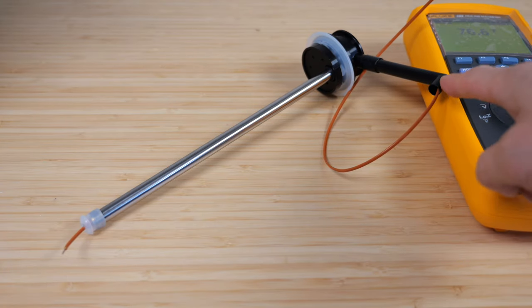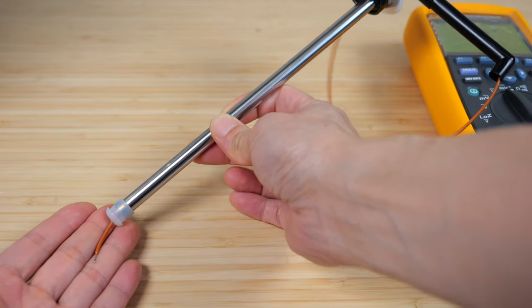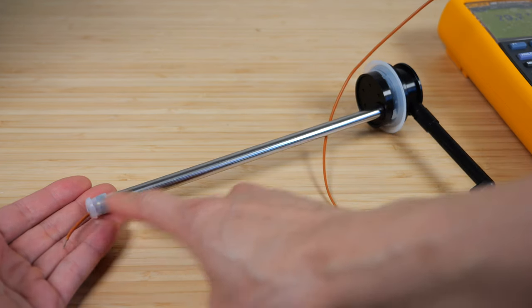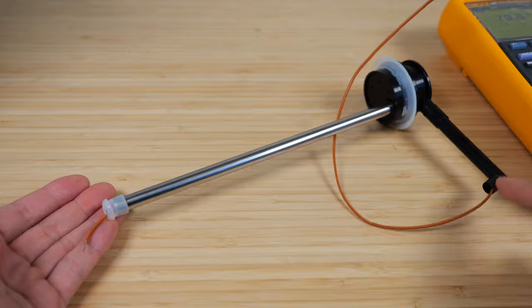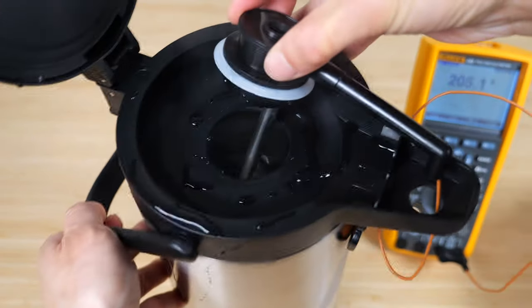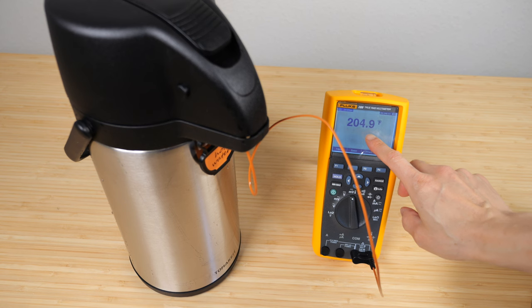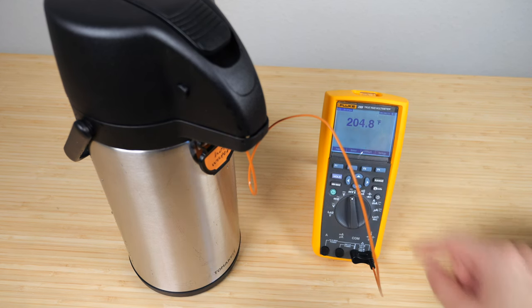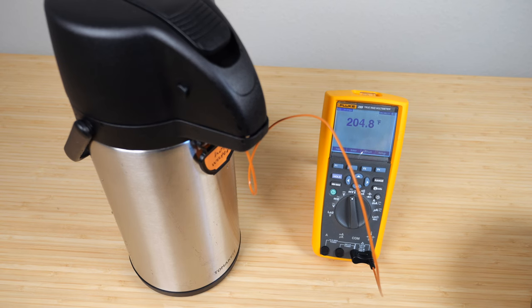I've managed to snake a thermal probe down the spout and all the way to the bottom of the pot. That means that there is no valve or anything from the end of this straw to the output spout. Let's put in some hot water. I poured boiling water in there. The water at the bottom is 205 degrees Fahrenheit. So plenty hot for a hot drink.